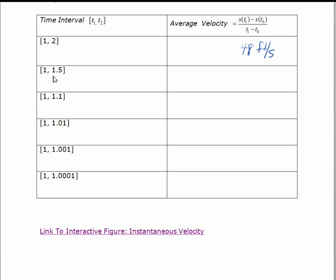In order to find the average velocity for each of these problems, we already know what s of 1 is. But we want to know s of 1.5, 1.1, 1.01, 1.001, and 1.0001. When you need to calculate or evaluate a function for many values, there's yet another method. We're going to use the table feature.